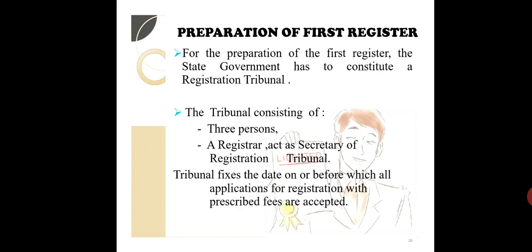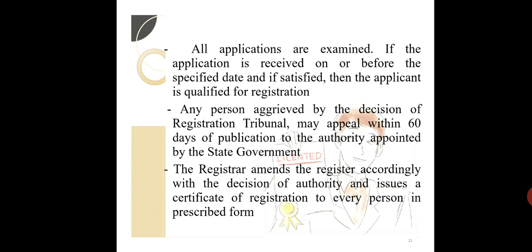For preparation of the first register, the state government constitutes a registration tribunal consisting of 3 persons; the registrar acts as secretary of the registration tribunal. The tribunal fixes a date on or before which all applications for registration with the prescribed fee are accepted. All applications are examined; if the application is received on or before the specified date and the applicant is qualified for registration, their name is entered. Any person aggrieved by the decision of the registration tribunal may appeal within 60 days of publication to the authority appointed by the state government. The registrar then amends the register accordingly and issues a certificate of registration to every person in the prescribed form.